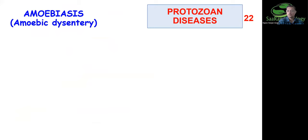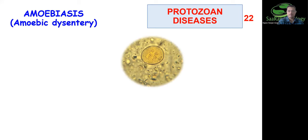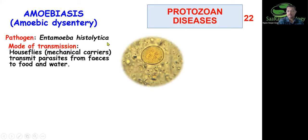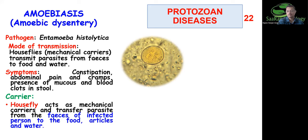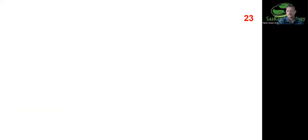Now we move to amoebiasis, also called amoebic dysentery. The causal organism is Entamoeba histolytica — 'entamoeba' for intestinal amoeba, and 'histolytica' meaning tissue breakdown. Transmission occurs through contaminated food and water. House flies (Musca domestica) act as mechanical carriers, transmitting the parasite from feces to food and water. Symptoms include constipation, abdominal pain, cramps, and passage of mucus and blood clots with fecal matter.